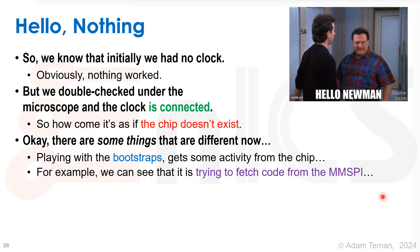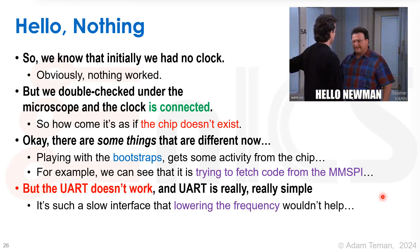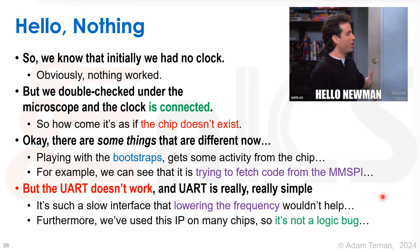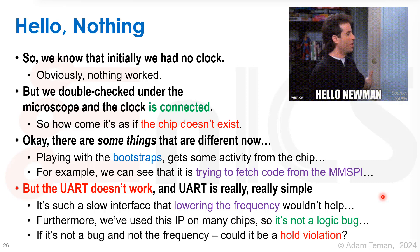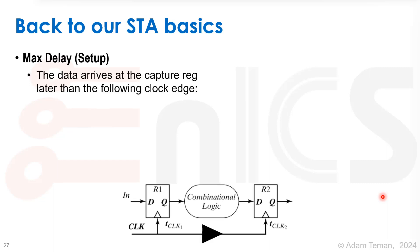We see that the chip is trying to do something — things are toggling up and down — but the UART doesn't work. UART is a really simple, slow protocol, so lowering the frequency wouldn't help. We've put this specific IP on many different chips before and it always worked, so it's not a logic bug. If it's not a bug and it's not frequency, could it be a hold violation? Let's go back to our static timing analysis basics.